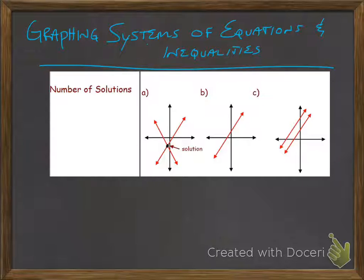The majority of the time you're going to have one solution, and that's when the two lines intersect. The solution is the point at which they intersect, the x and y coordinate point.